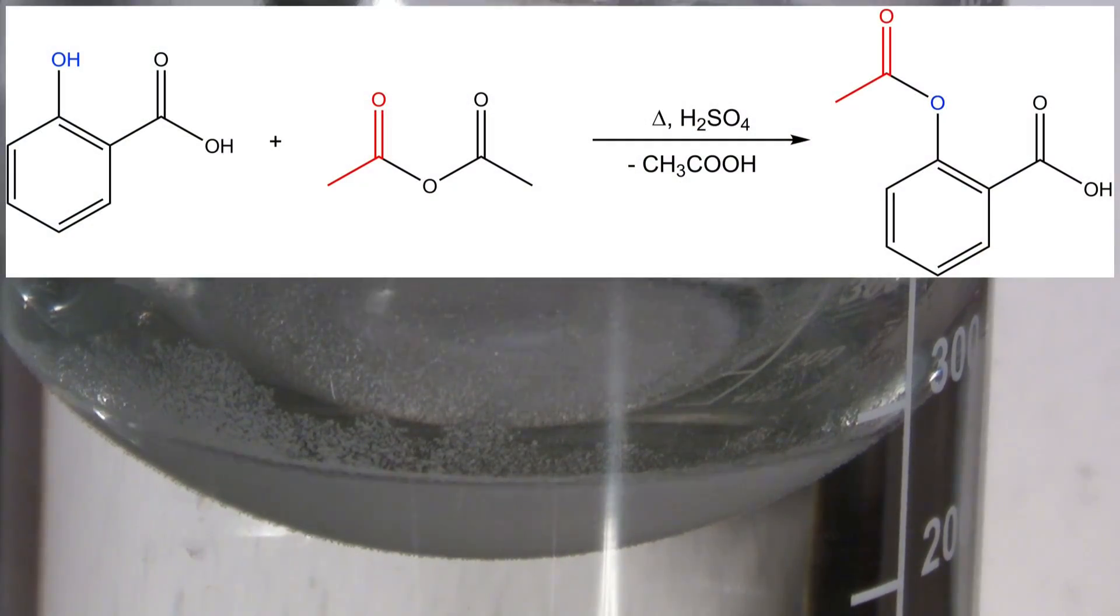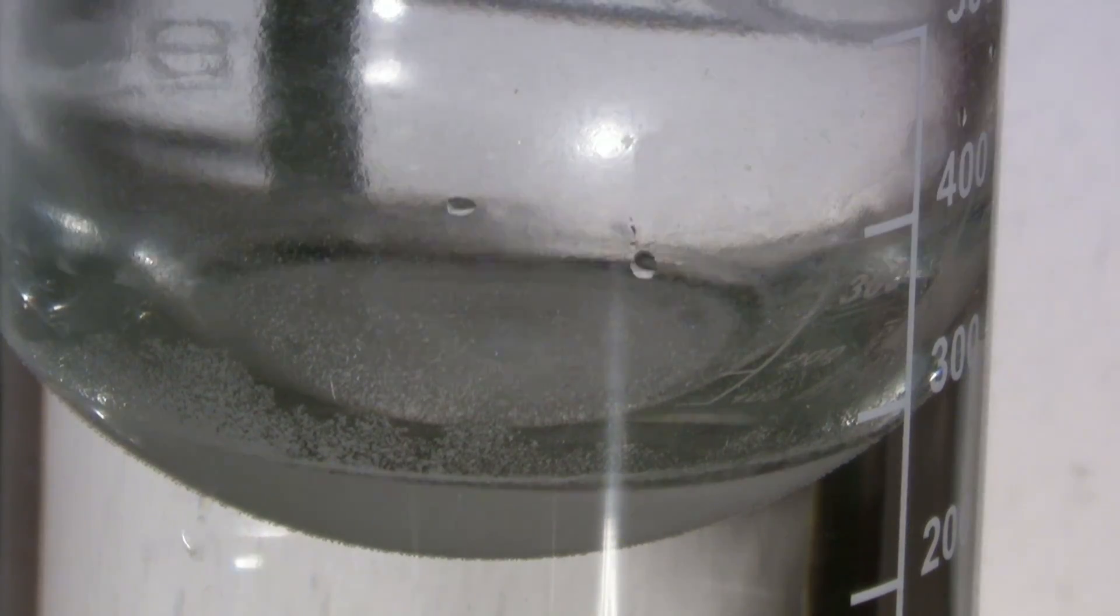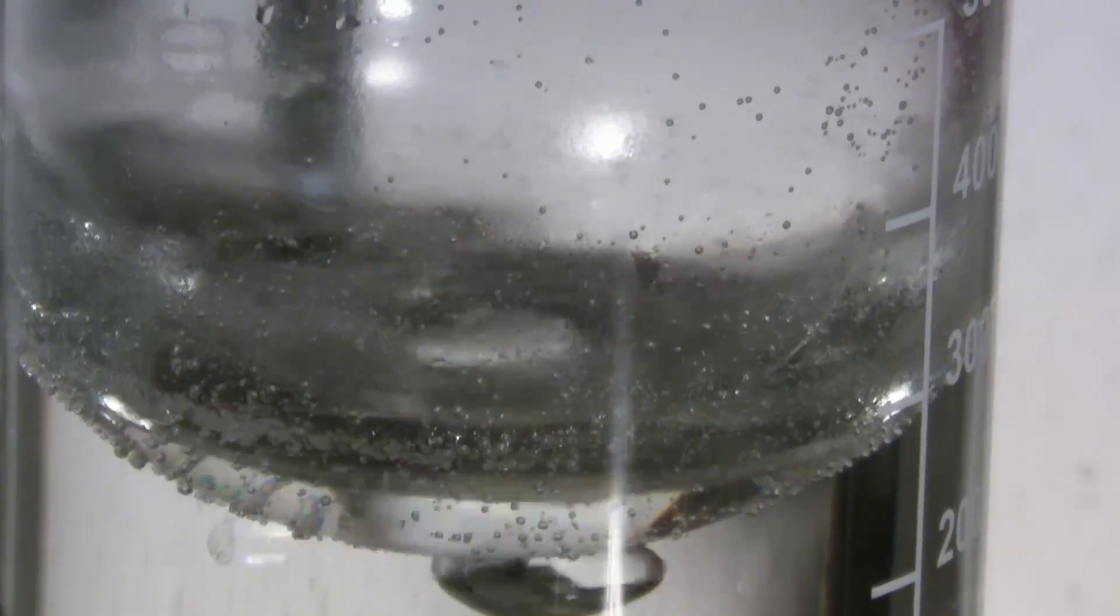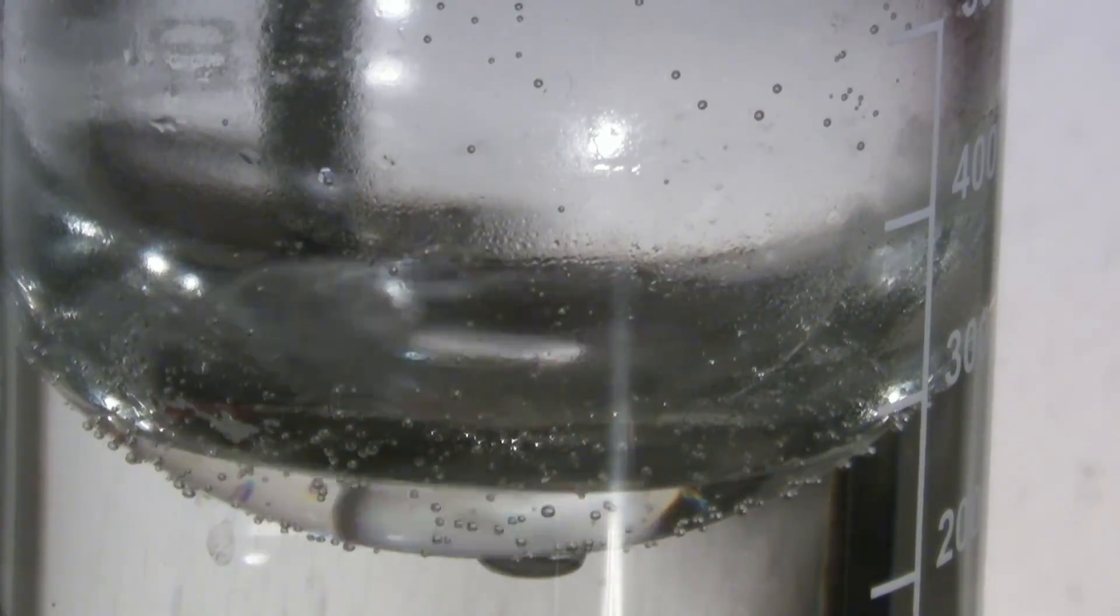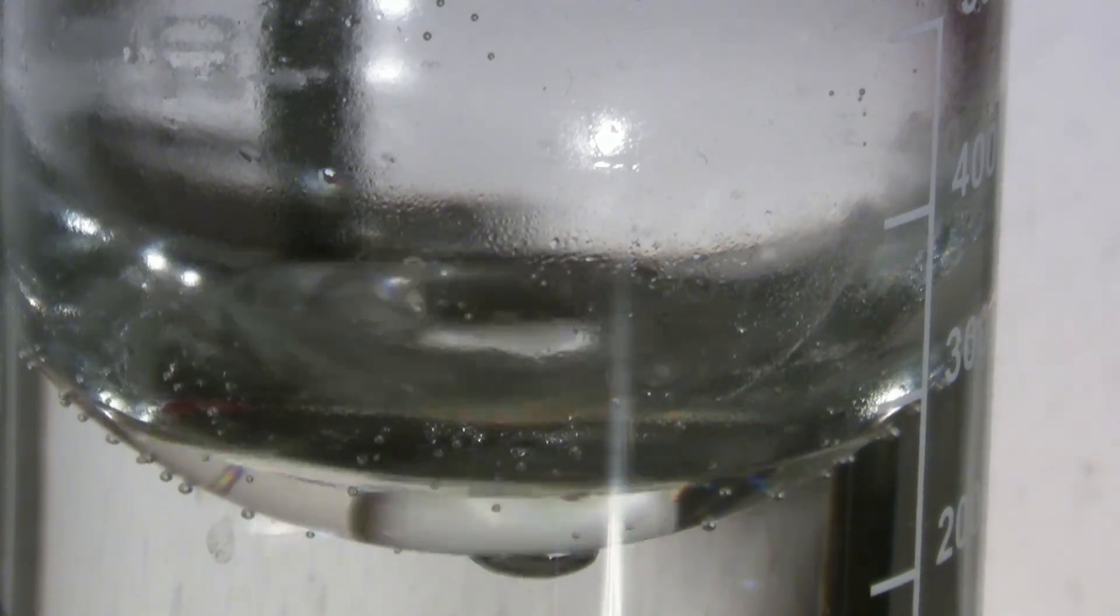The OH group of the salicylic acid is esterified by the acetic anhydride. This is catalyzed by the sulfuric acid. The addition of an acetyl group is also called acetylation. The use of glacial acetic acid or acetyl chloride will only lead to a bad yield or no reaction at all.